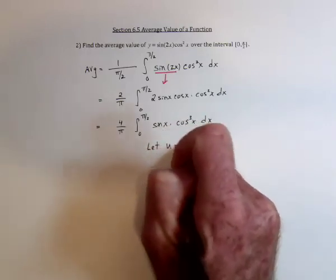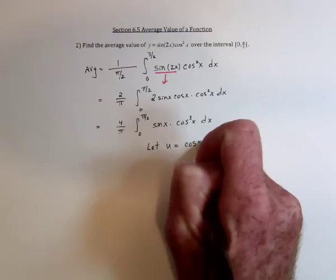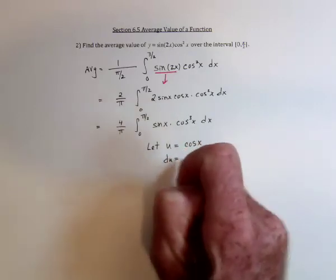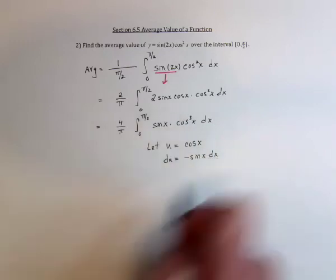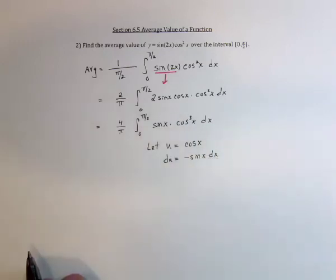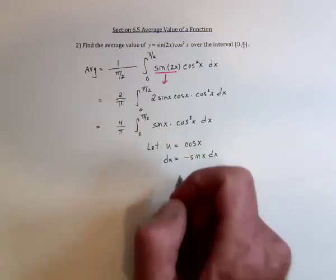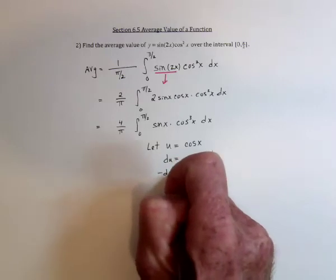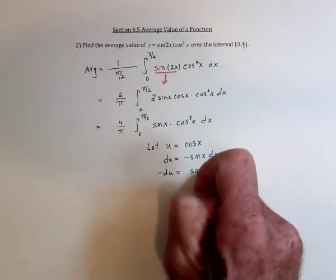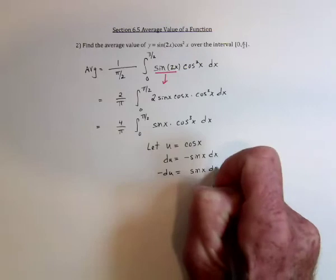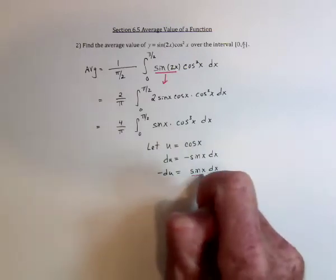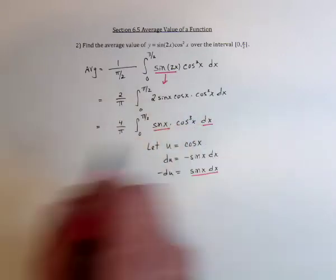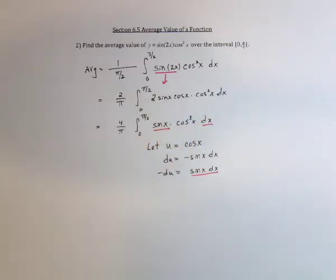So let u equal cosine of x. The derivative of that is negative sine of x. This doesn't have a negative sine, so we just need to move that over to the other side. And then this has sine of x dx, and this has sine of x dx. So it's perfectly set up for the u-substitution.